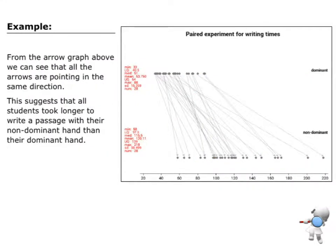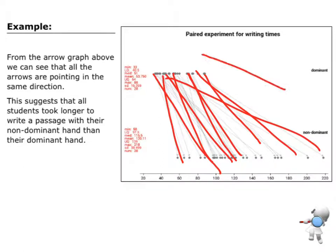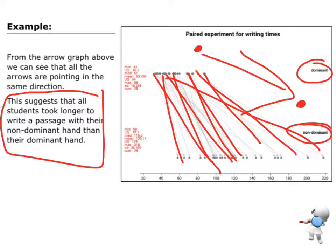So that's the first part — understanding the graph. Now we need to interpret this graph. What I want you to notice is the direction that the arrows are taking. Here, all of the arrows are going from left to right — dominant hand to non-dominant hand. So that means they're taking some amount of time with their dominant hand and a longer time with their non-dominant hand. Because the arrows are all pointing in the same direction, that tells me that all of the students took longer to write with their non-dominant hand than with their dominant hand.